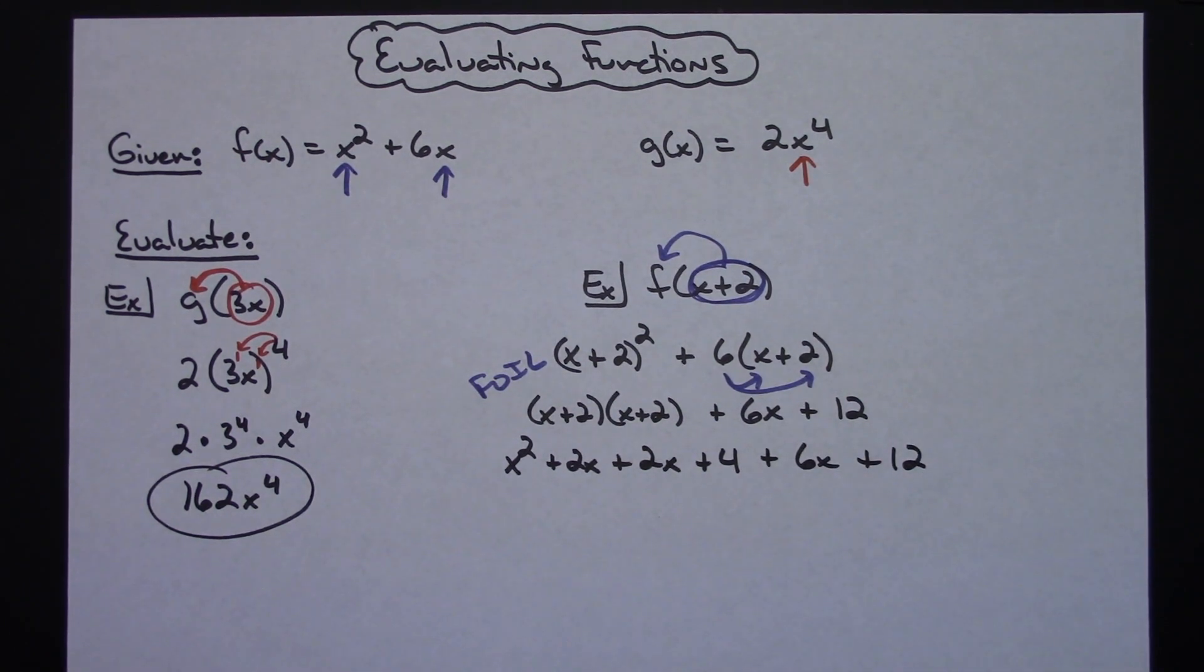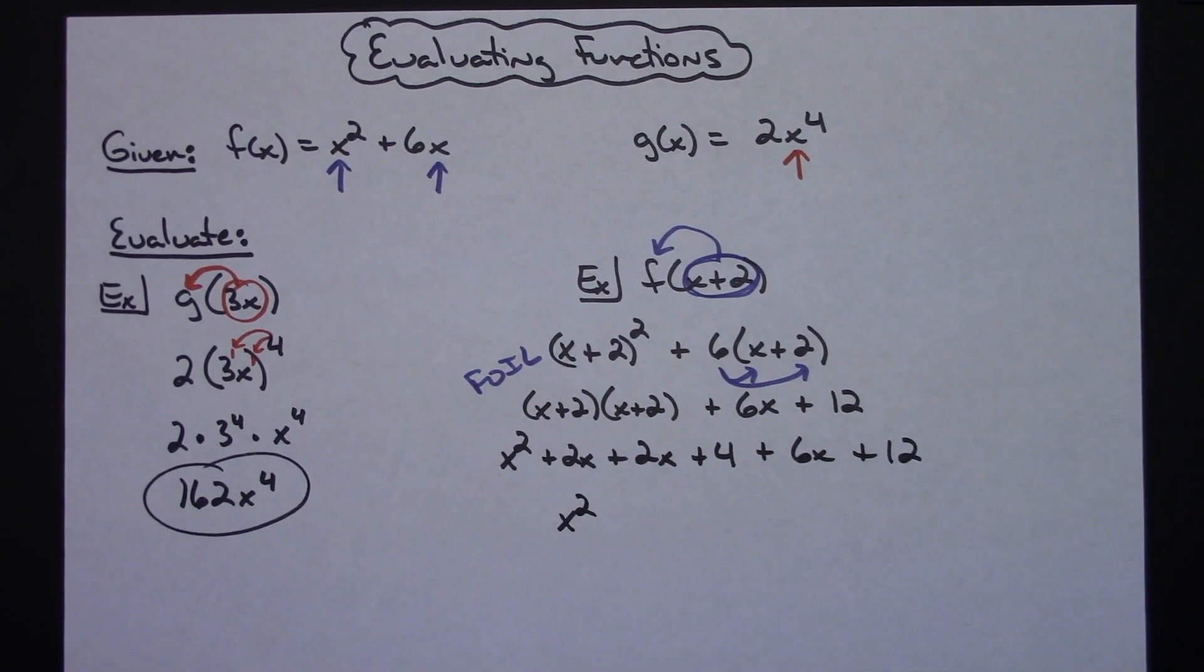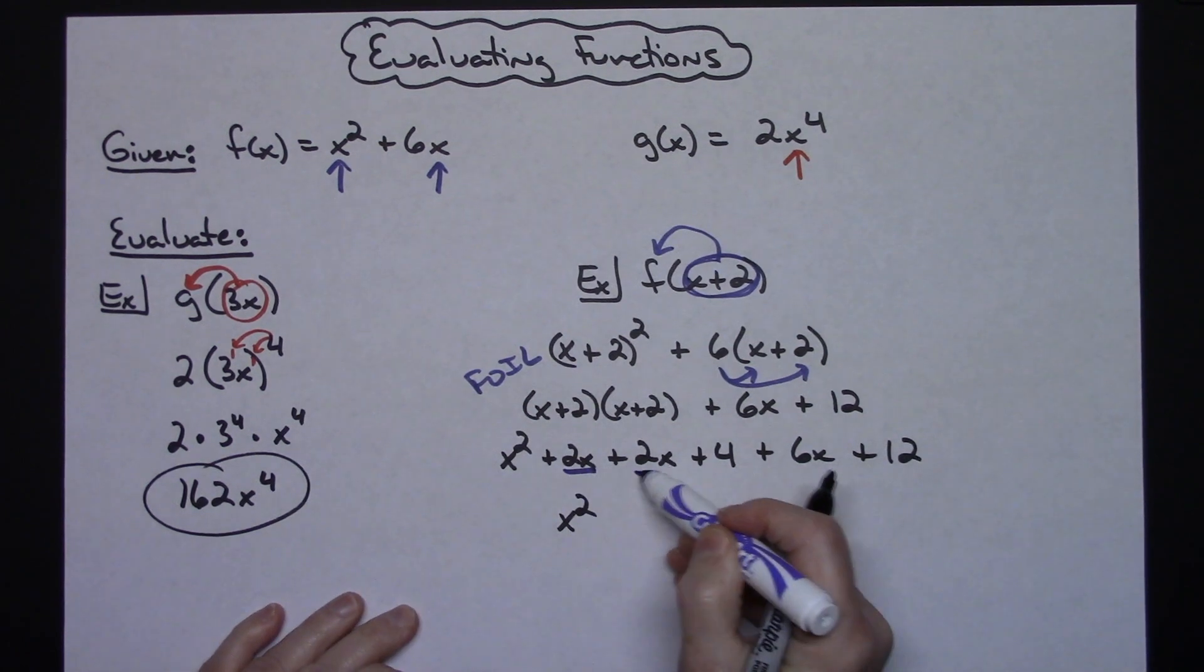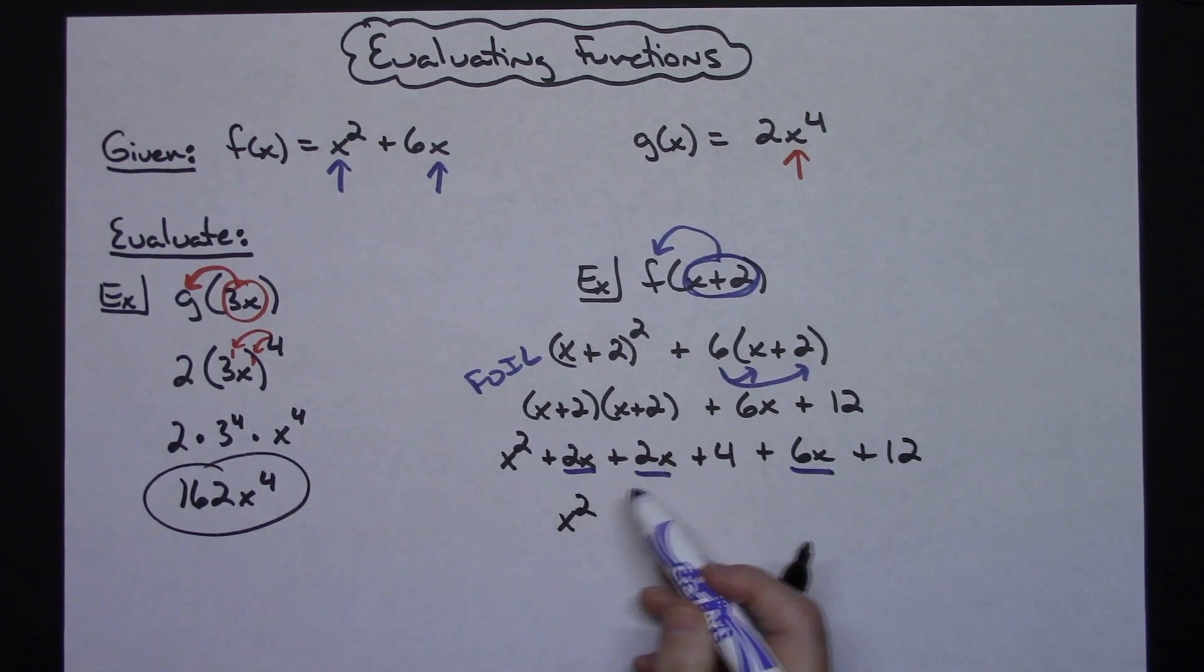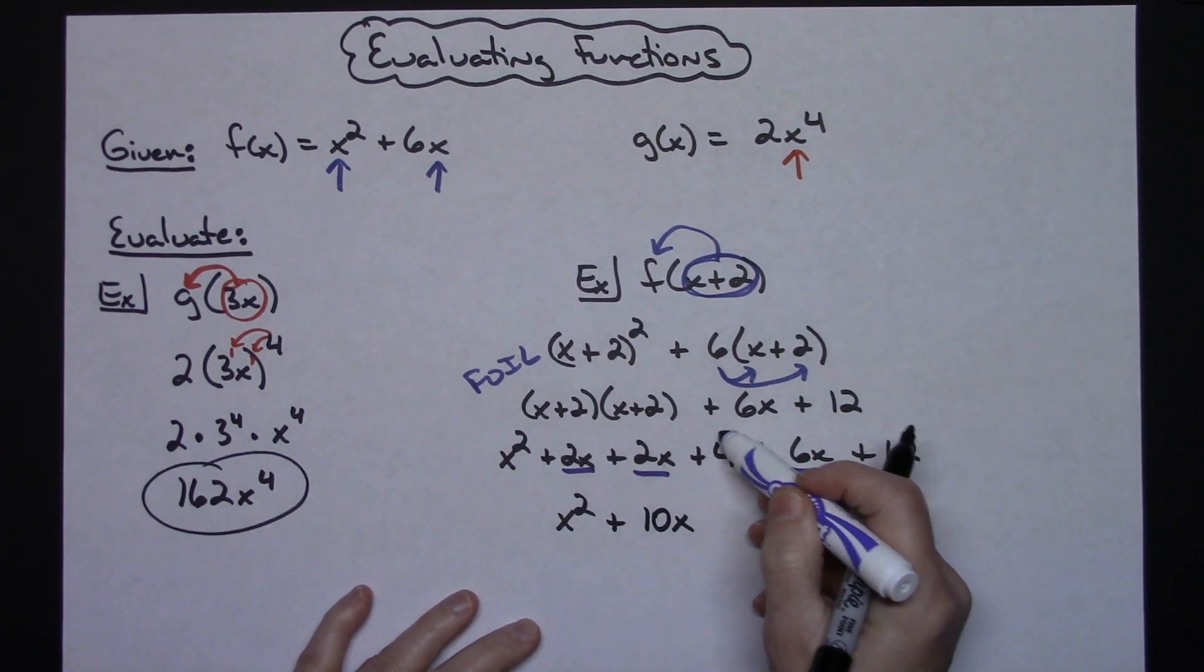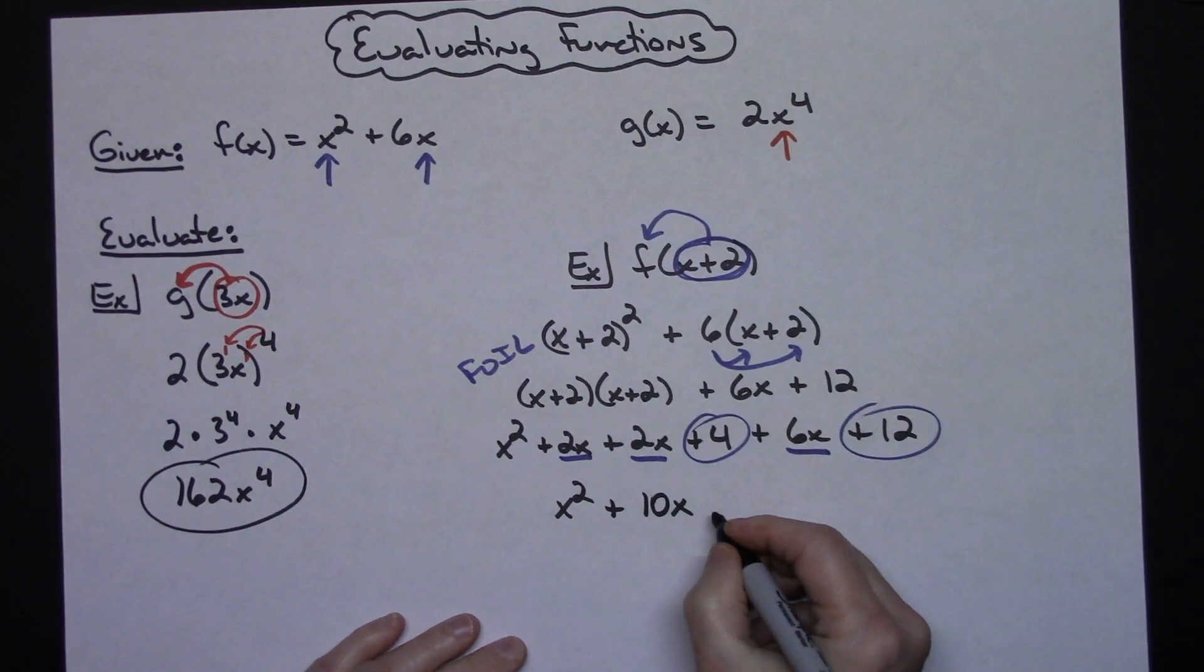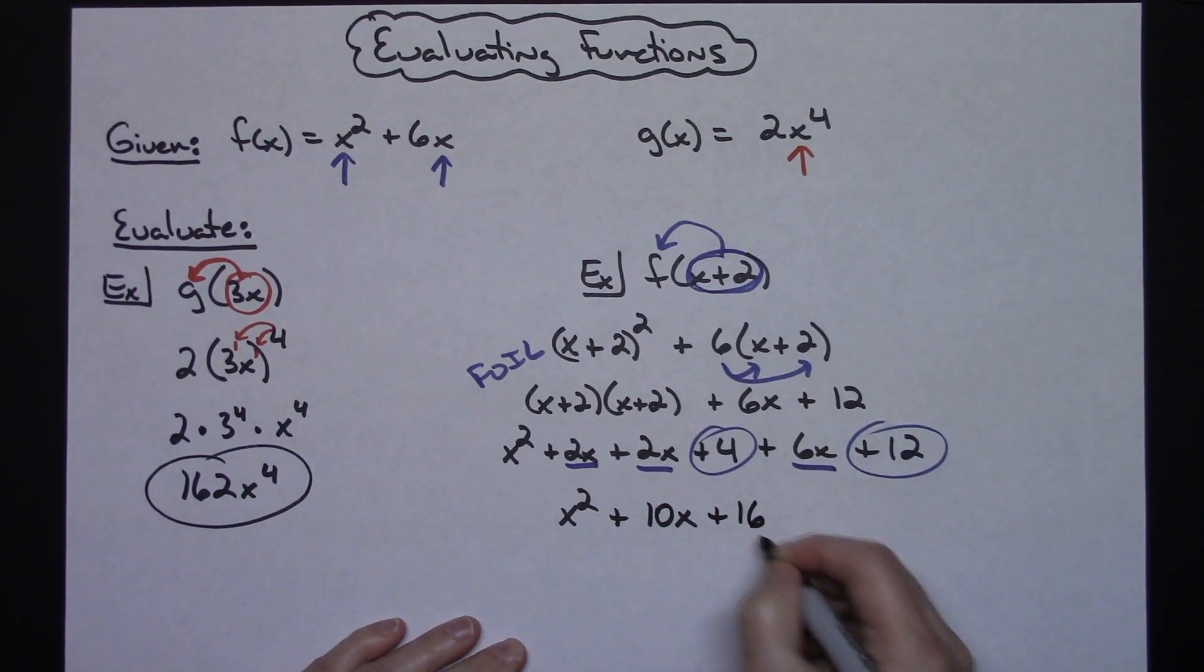Then I just need to go through and combine like terms. My x squared - I only have one of those. Then I'm going to put all the plain x's together: 2x plus 2x plus 6x gives me plus 10x. And I can add the two constants, 4 and 12, that's going to give me plus 16.